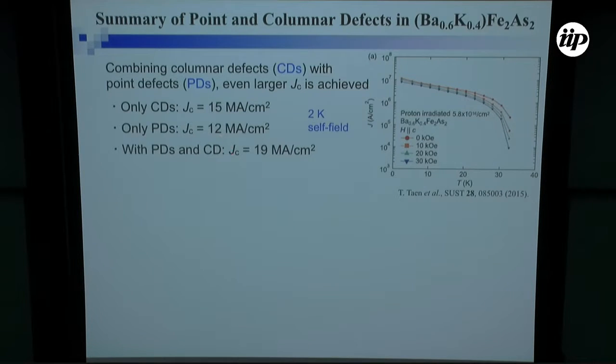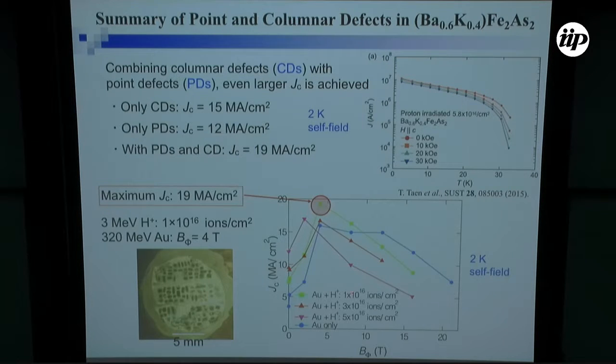This is another summary, comparison between columnar defects and point defects in the same material. When we only introduce columnar defects, we can achieve 15 mega-amps per square centimeter. When we use proton to introduce point defects, we can also go up to say 12 mega-amps per square centimeter at lowest temperatures. If we combine these two, at least in our optimal condition, we can achieve this value, in this particular case, which is this green one, proton irradiation 1 times 10 to 16 ions per square centimeter, and gold ion with 4 Tesla matching. This 19 mega-amps per square centimeter is one of the largest value ever achieved in 122 system.